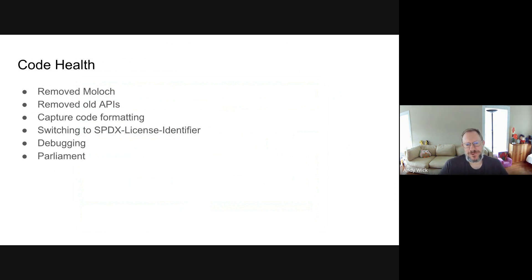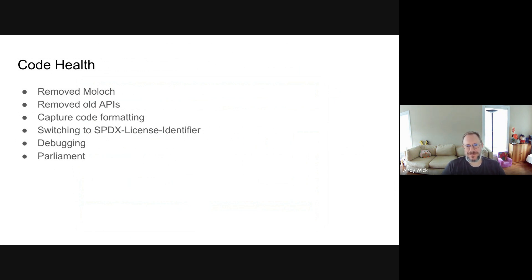On code health and tech debt removal, we've been working on removing Moloch everywhere and fully embracing Arkemi in the code — Capture is already done and Viewer is coming soon. We're also moving all the old APIs — we were still supporting APIs from version 1 of Moloch, but those aren't being used anywhere anymore, so we're removing them. We're updating all of our license headers to the new standard that makes them machine-readable. We've improved our debugging, and Parliament has been mostly rewritten in a new style — it had been dormant and lagging, and now it's been almost totally rewritten to deal with all the new shared components and be more robust.